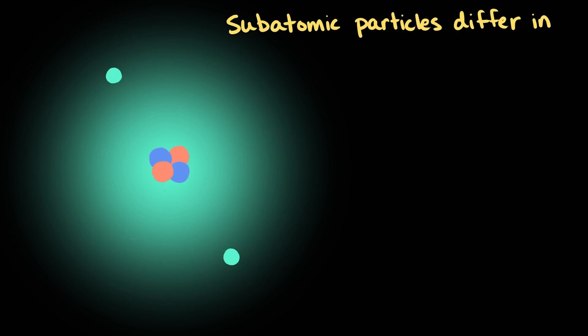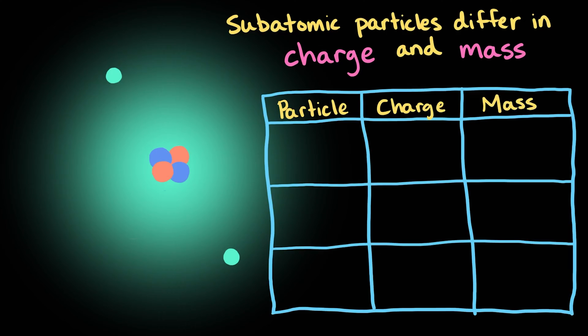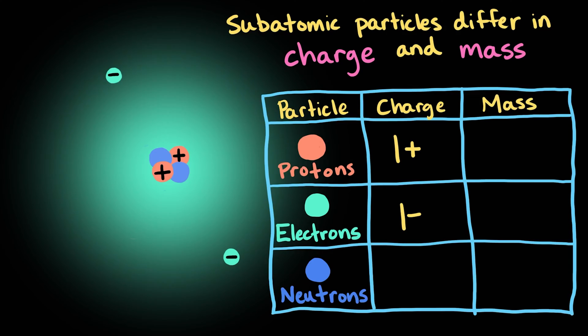Protons, neutrons, and electrons differ in terms of their charge and mass. Let's take a look at charge first. Protons have a positive charge of 1+, and electrons have a negative charge of 1-. These charges are equal and opposite. So when protons and electrons are paired in atoms, their charges cancel. Neutrons have no charge, which means they are neutral.